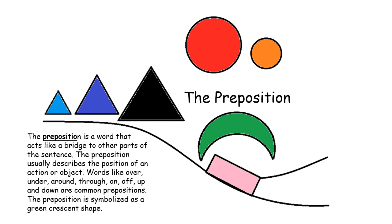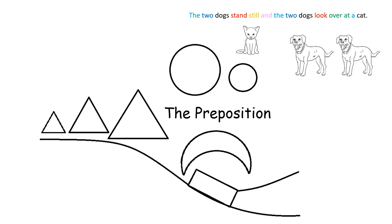The preposition is a word that acts like a bridge to other parts of the sentence. The preposition usually describes the position of an action or object. Words like over, under, around, through, on, off, up, and down are common prepositions. The preposition is symbolized as a green crescent shape. You can see in this sentence that I have colored the words over and at green because they both describe where the dogs are looking. They are preposition words.